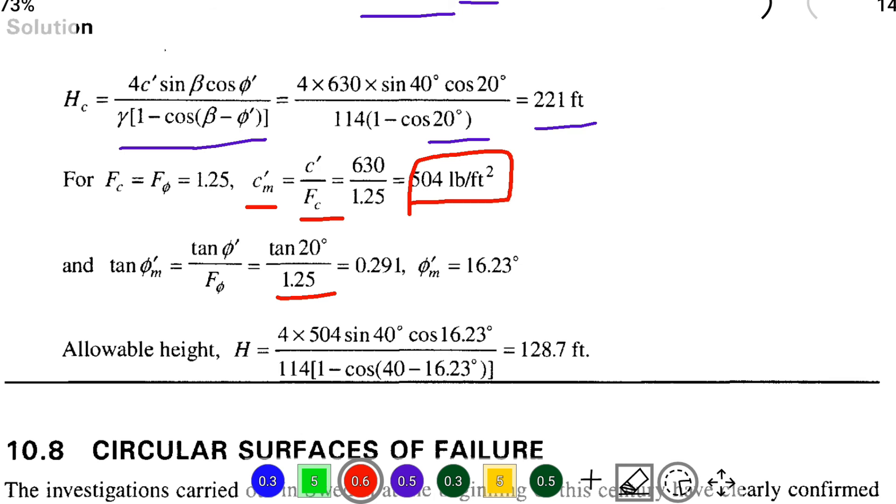From that we can solve, that is 0.291. So tan inverse of 0.291 gives φ_m equal to 16.23 degrees.